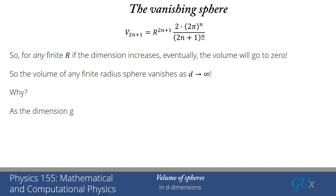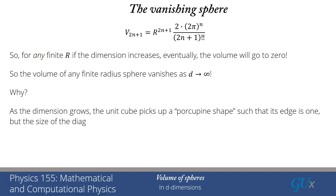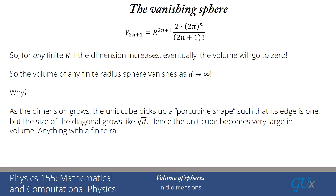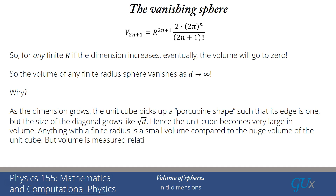Why is this happening? Volume is measured relative to the unit cube. In high dimensions, the unit cube develops a 'porcupine shape': each edge along an axis is 1, but the diagonal — the vector (1,1,1,...,1) with d components — has length √d. So as d grows, the unit cube's diagonal goes to infinity; the cube is actually becoming infinitely large. The sphere stays finite because everything is confined within radius r. Since we measure volume relative to the unit cube, and the cube is diverging while the sphere is not, the sphere's volume must vanish in high dimensions.